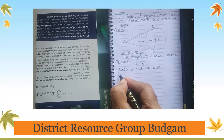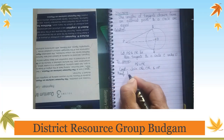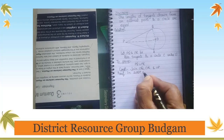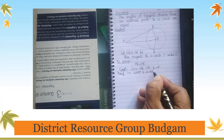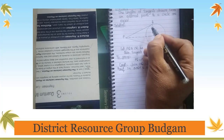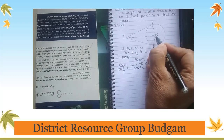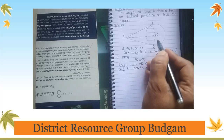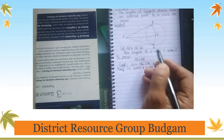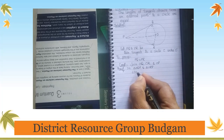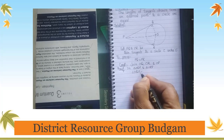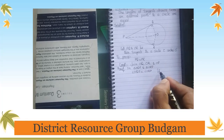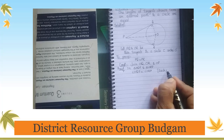Proof: In triangle OQP and triangle ORP — angle OQP = angle ORP, because the angle between the radius and tangent at the point of contact is 90°. So each of these angles equals 90 degrees.